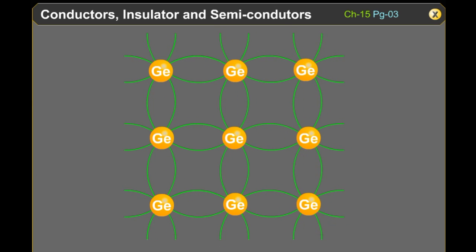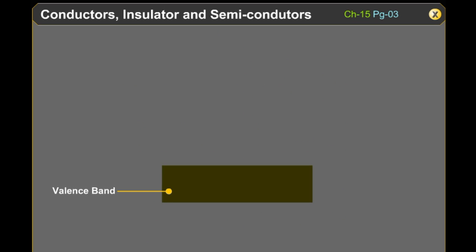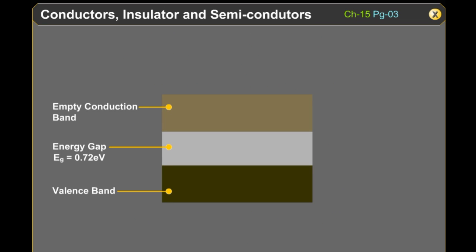Germanium is the best example of an intrinsic semiconductor. In germanium, the four valence electrons form four covalent bonds by sharing the electrons of the neighboring four germanium atoms. Each covalent bond shares two electrons, one from each atom. In this covalent bond, each germanium atom in the crystal behaves as if the outermost orbit of each atom is complete with eight electrons, having no free electrons in the germanium structure.